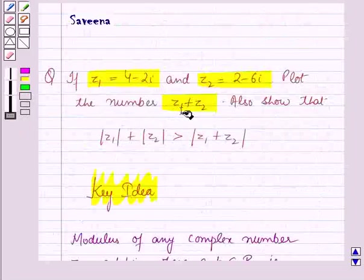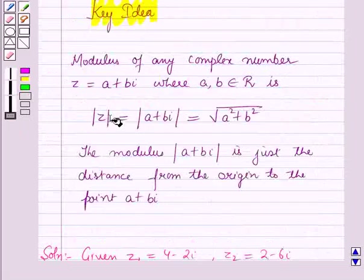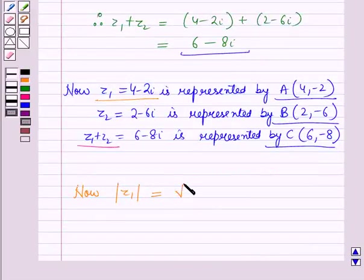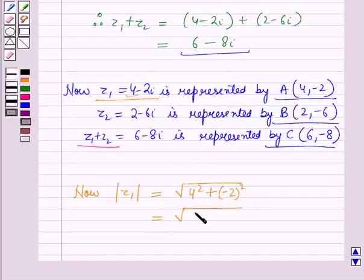We have plotted the number Z1 plus Z2 and now we have to show the inequality. We will use the result given in the key idea. Now Z1 is equal to 4 minus 2 iota, so modulus of Z1 will be equal to square root of 4 squared plus (−2) squared, which equals square root of 16 plus 4, equal to root 20, which is equal to 2 root 5.